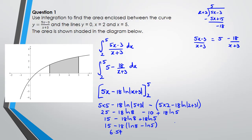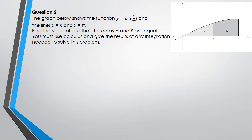That's how you do question 1. Let's go to question 2. We've got a graph of sin(x/2) and we're trying to find the value of k so that area A equals area B. There are two ways to do this. One method is to find the total area A plus B between 0 and π of sin(x/2) dx, halve it, and use that to find area A between 0 and k. The other way — which I'll use — is to set up A = B directly, where area A is to the left of k and area B is to the right of k.